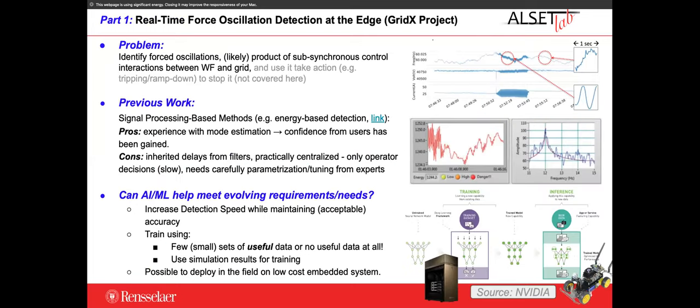So, real-time forced oscillation detection at the edge — people in the NASP community are familiar with this. The problem is that we want to identify these forced oscillations: first to detect them, then to find the source. This presentation is focused on first detecting them. They're usually a product of synchronous control interactions between wind turbines and the grid. Here are some real measurements from Oklahoma Advanced Electric that I've been using for a long time.